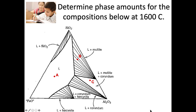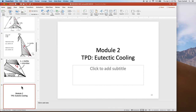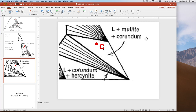Now let's look at composition C, which was in a three-phase field. I'm going to exit the program and zoom in to the region with the three-phase region. We've already identified it's in a three-phase field, so the compositions of those three phases are the corners of the triangle: corundum (aluminum oxide) is down here, mullite is here, and the remaining one is the liquid composition — anywhere along that liquidus line. So that's our triangle for determining phase amounts.